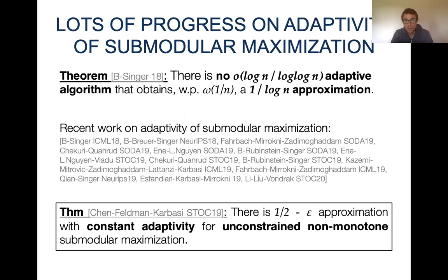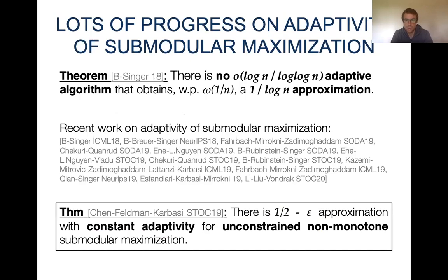Furthermore, it has been shown that this log-n round complexity is optimal in absolute order terms — it is the optimal number of rounds if we want to obtain a constant factor approximation. This log-n adaptivity result started a very recent and growing line of work on the adaptivity of submodular maximization.